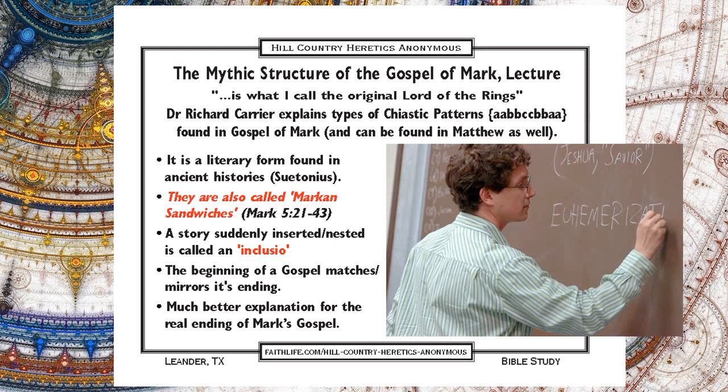In antiquity, the temple curtain that would have been torn was a symbol of the barrier between heaven and earth, and even had the heavens painted on it — we know this from Josephus. So these are clearly designed to echo each other. The beginning is designed to match the end.